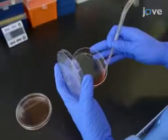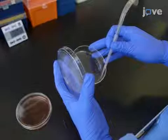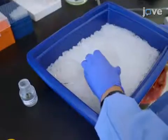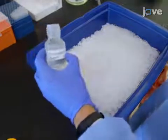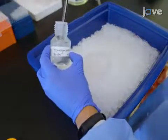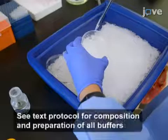Then, aspirate the growth medium by vacuum. Next, place the culture dishes on ice and gently wash the cells twice on the culture dishes with 10 milliliters of chilled homogenization buffer per dish.